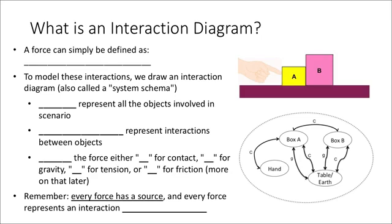What is an interaction diagram? By this point, we know that when we say the word force, what we're really talking about is an interaction between two objects. So sometimes when we have a lot of interactions going on at the same time, it's useful to draw something called an interaction diagram, which is also called a system schema. In this representation — you see an example here on the right — the circles represent all of the objects involved in the scenario.